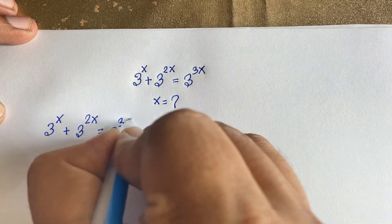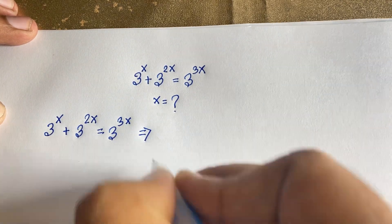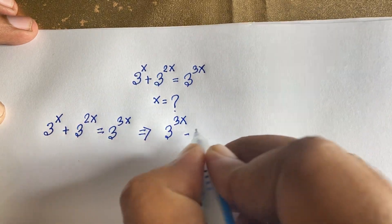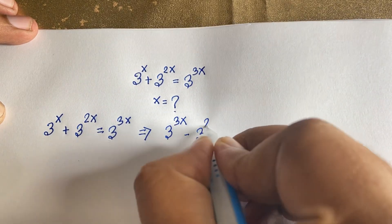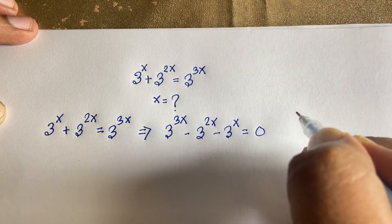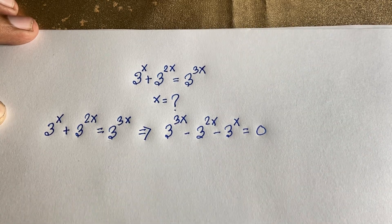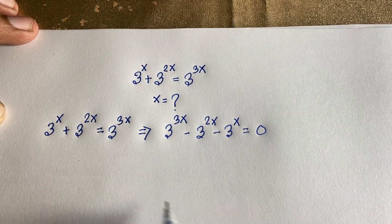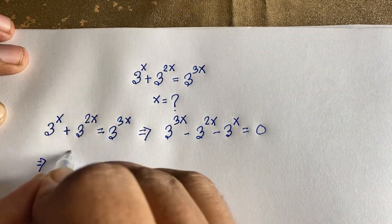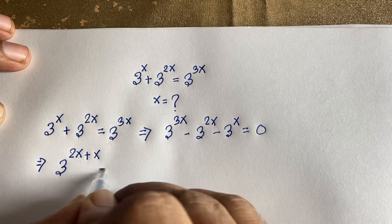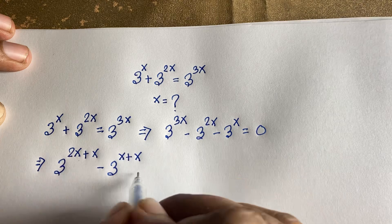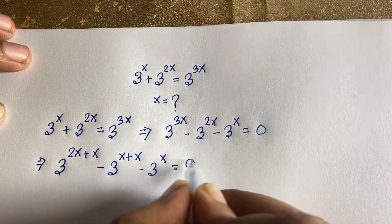We rearrange this equation by moving all terms to one side: 3 to the power 3x minus 3 to the power twice x minus 3 to the power x is equal to 0. We can rewrite 3 to the power 3x as 3 to the power (2x + x), and similarly 3 to the power 2x as 3 to the power (x + x), giving us the same equation in expanded exponential form.